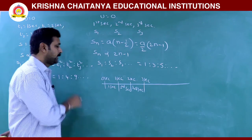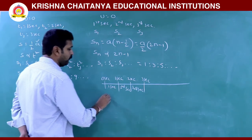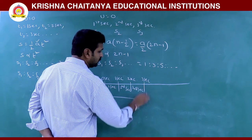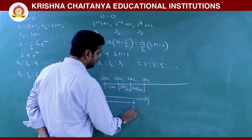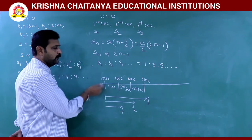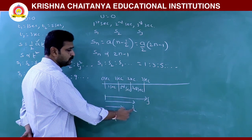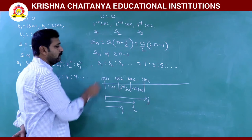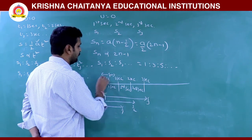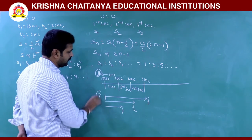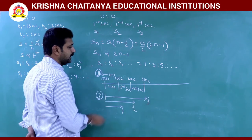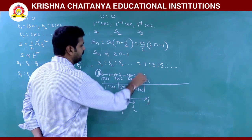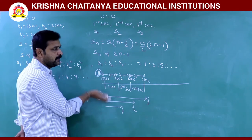In the first method, we find ratios of total displacements from 0 to 1, 0 to 2, 0 to 3 seconds — giving S1, S2, S3 from the origin. In the second method, we find displacements in each individual second: the 1st second, 2nd second, 3rd second — giving the Sn values separately.